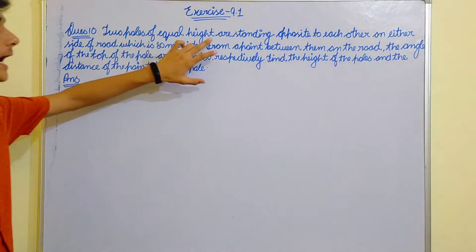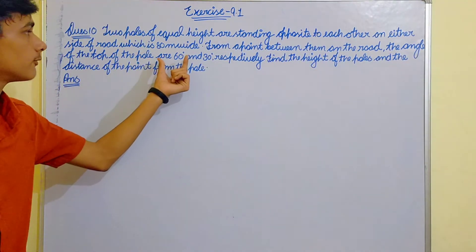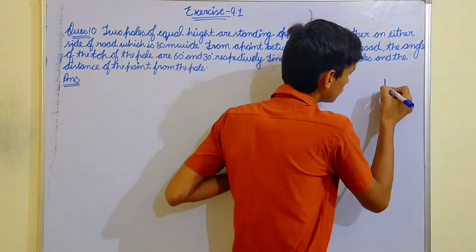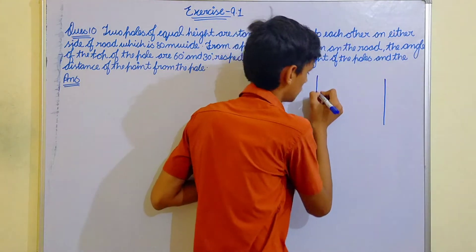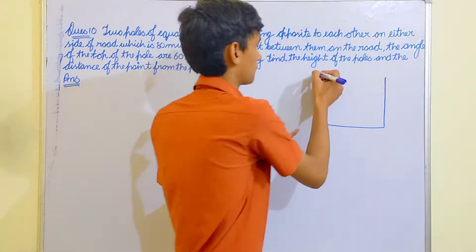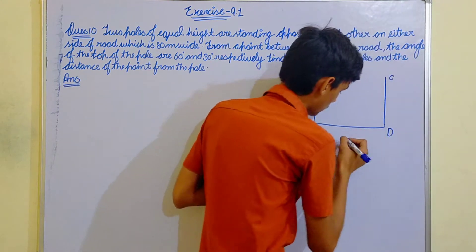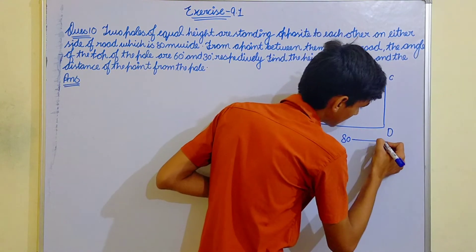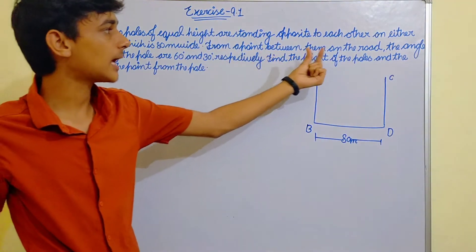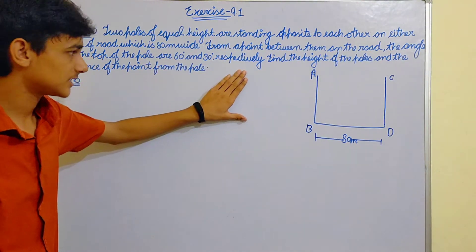Two poles of equal height are standing opposite to each other on either side of the road, which is a divider. This is given that two poles are A and B, and the width of the road is 80 meters.